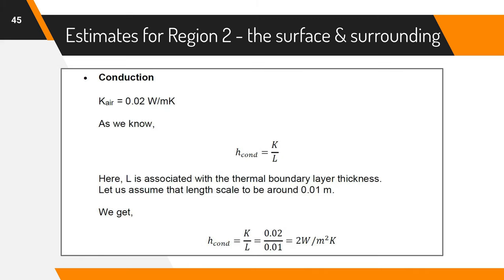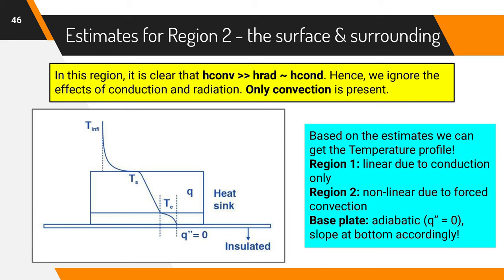Conduction calculations are similar to that of region 1. The length scale here is assumed to be of the order of 0.01 meter. The small value of K leads to a conductive heat transfer coefficient of 2 Watt per m² Kelvin. We can safely ignore the effects of radiation and conduction in region 2 as H convection is much much greater than H radiation and H conduction. This gives us the idea of the temperature profile. It is linear in the bulk only conduction region. Non-linear outside only convection region. And assuming the plate to be an insulator, the temperature profile is adiabatic like near the base.